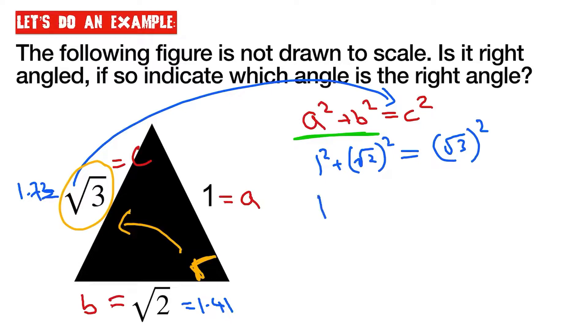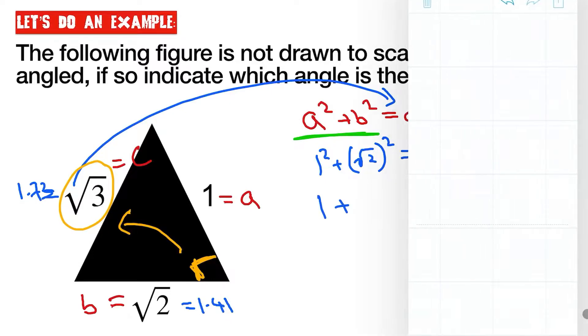So one squared is just one. So let's use our calculator, we're going to do the square root of two squared, which in this case equals to two. So let's write that down here. And then the square root of three squared, which equals to three.